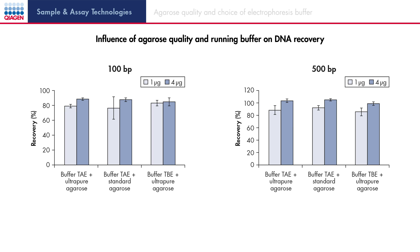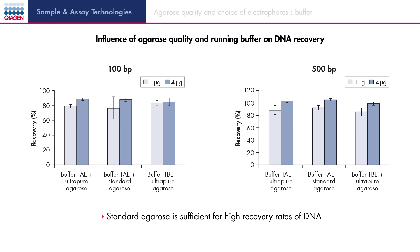The experiment has shown that the recovery rate is always slightly increased when applying more DNA to the column. If all other parameters remain unchanged, buffer TBE results in a slightly lower recovery rate than buffer TAE. The use of ultra-pure agarose does not have a significantly positive effect on the recovery rate. The key finding is that standard agarose is sufficient for high recovery rates of DNA.